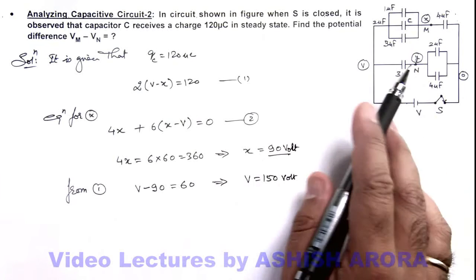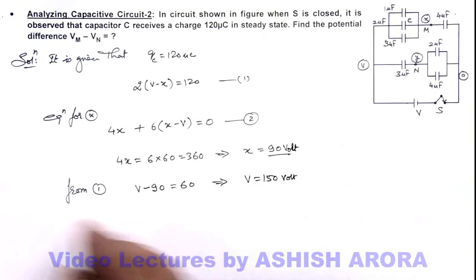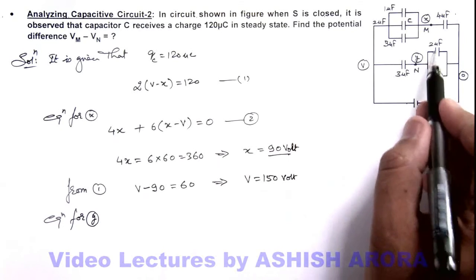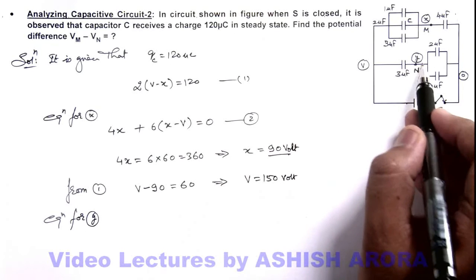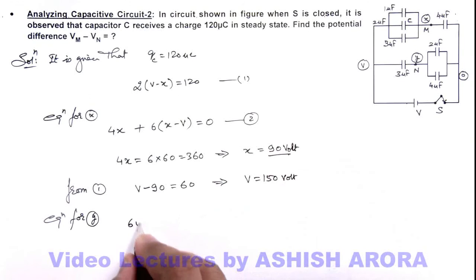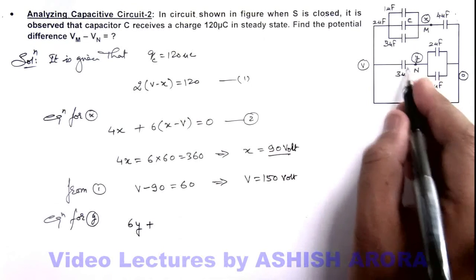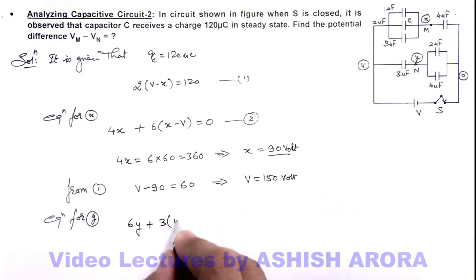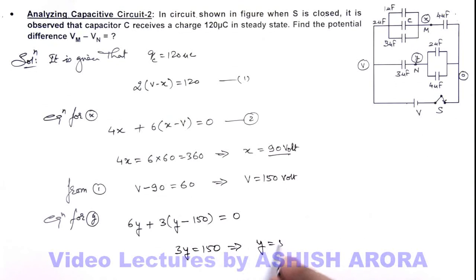Now writing equation of y we can get the value of y also. Equation for y will be the sum of the charges on the plates connected to y should be equal to zero. On right hand side it is 6y, plus on left hand side it is 3 multiplied by y minus V which is 150. This should be zero. This will give us a value 3y is equal to 150, which implies the value of y is equal to 50 volt.